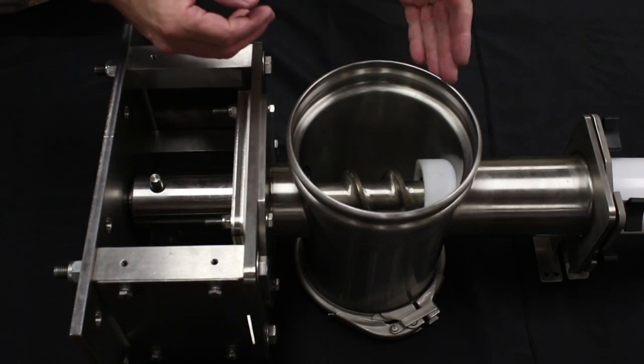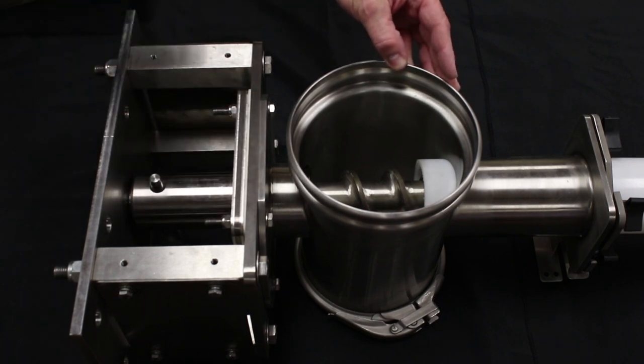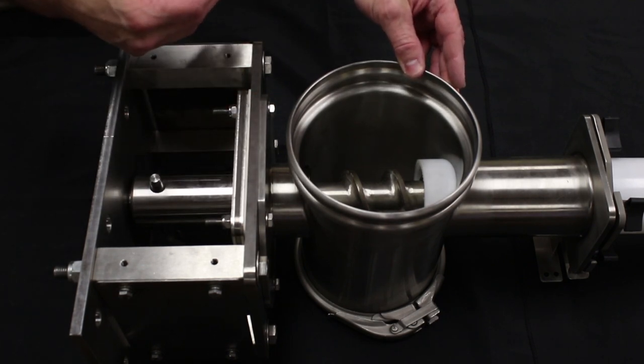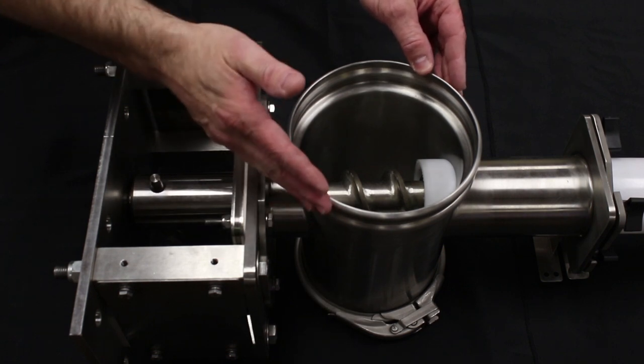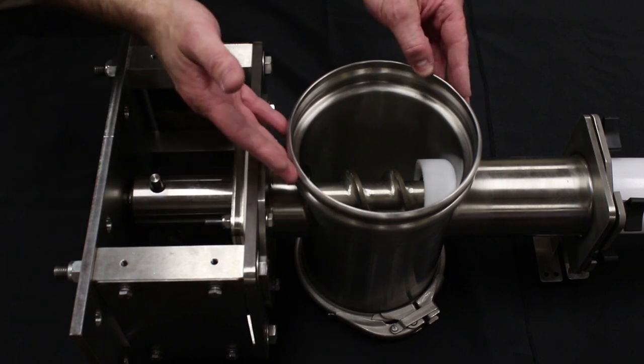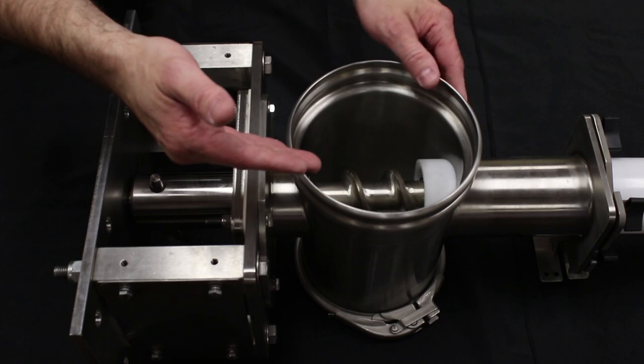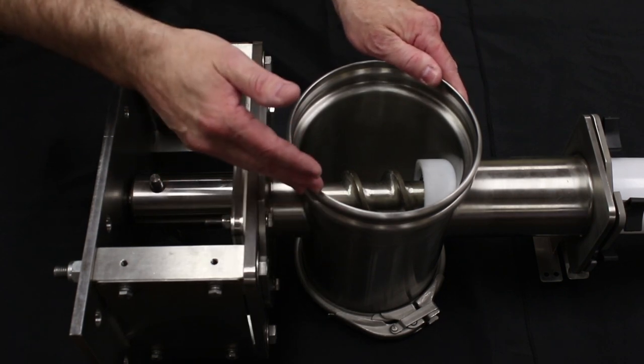This discharge housing for the flexible screw conveyor is showing a couple quick clean and sanitary features. On the top you have a BFM fitting that can be welded onto the unit. This can be used on the outlet end as well on the bottom side.